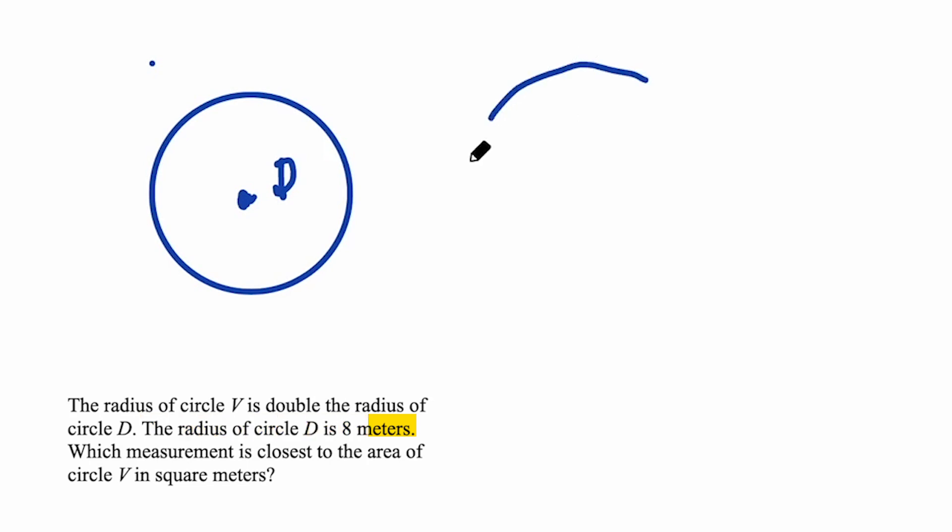Then we've got circle V, which was twice as big—it's got double the radius. So I'm going to draw that with a radius that's twice as big. Again, we're going to draw that circle with the point in the middle and label that V, because that's how we generally name circles. We've got circle D and circle V, and circle V has twice the radius.